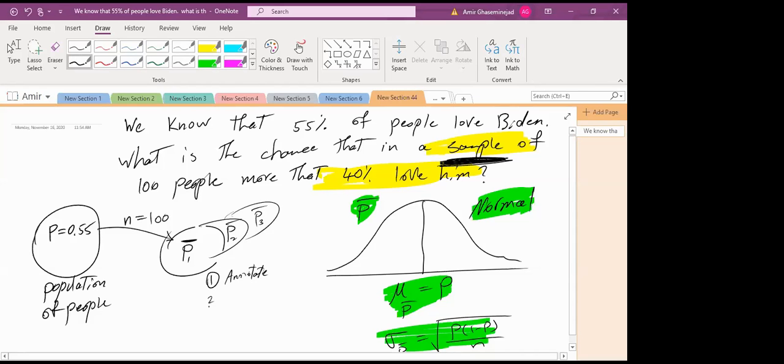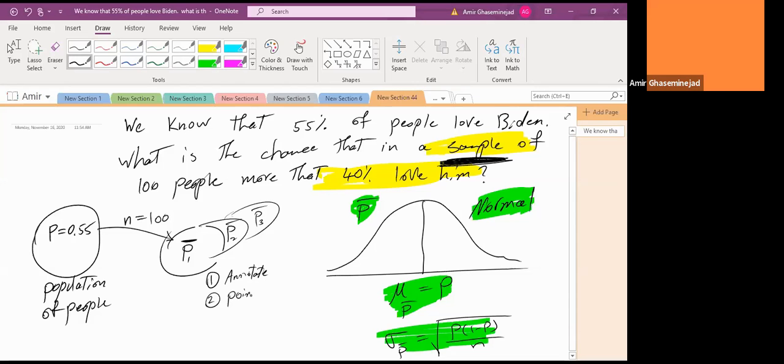And the second step is identify the points of interest. What is the proportion in the population? 0.55. And the standard deviation, let's calculate that before we go further. 0.55 multiplied by 0.45 divided by 100. So please tell me what is the standard deviation of p bar?